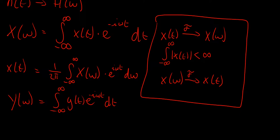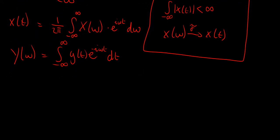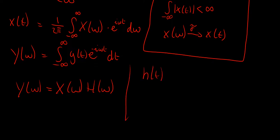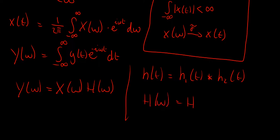There are a lot of properties here. We can now define our output as Y(ω) = X(ω) multiplied with H(ω). And if we have a cascade of systems — remember that h(t) was h₁(t) convolved with h₂(t) — well now we can just say that H(ω) of the whole system is simply H₁(ω) multiplied with H₂(ω), and multiplication is much easier than convolution of course.